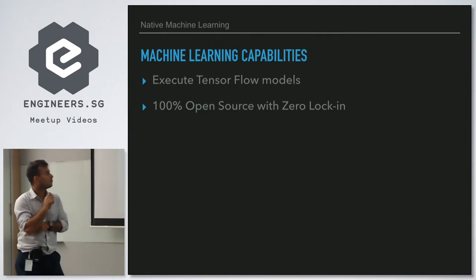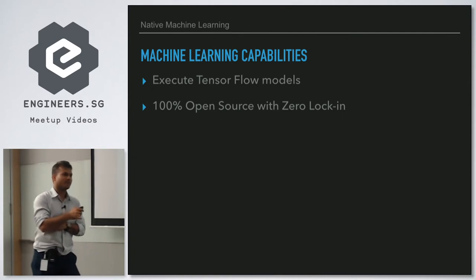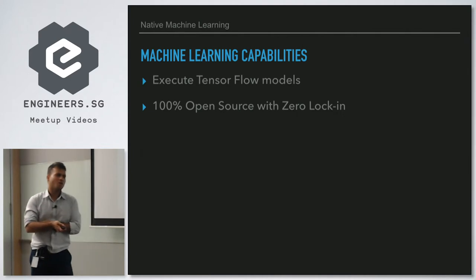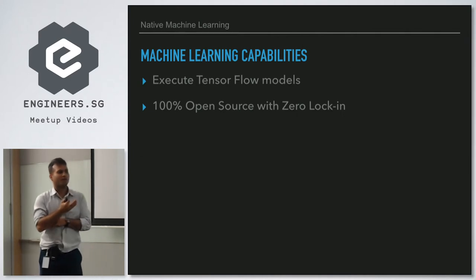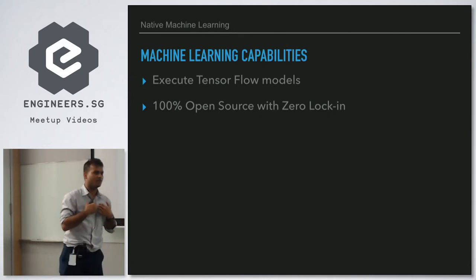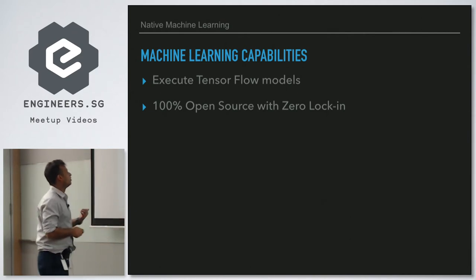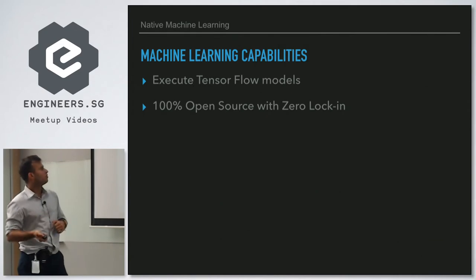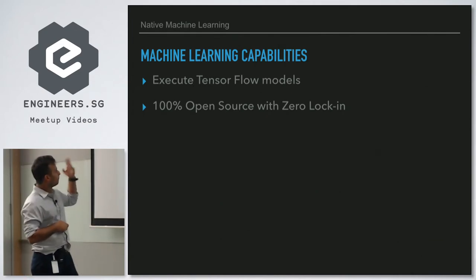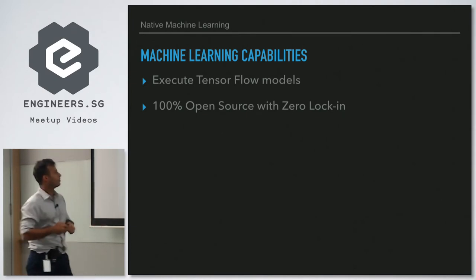FlowGo also has machine learning capabilities — you can execute TensorFlow models natively within it. Creating TensorFlow models can be done with any open source tool; within TIBCO we also have a product called Statistica that can help create models, which can then be executed inside FlowGo. It has native support for that. It's 100% open source with zero lock-in.